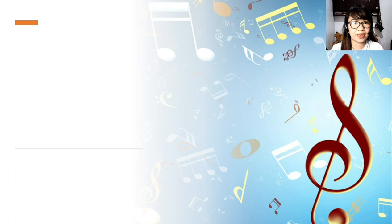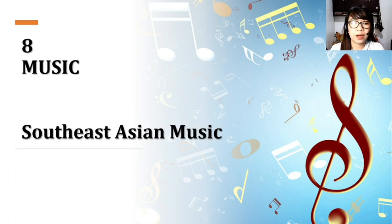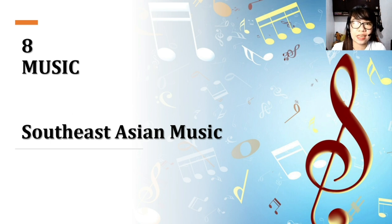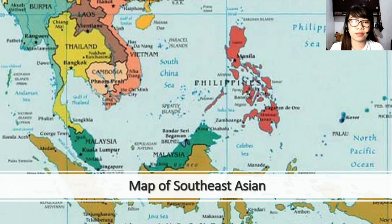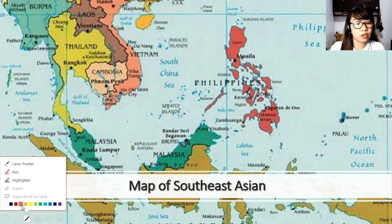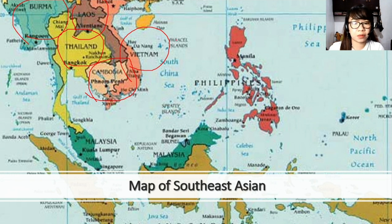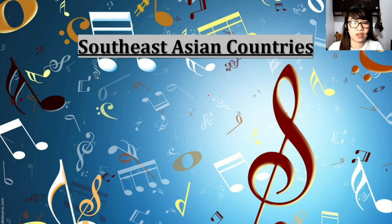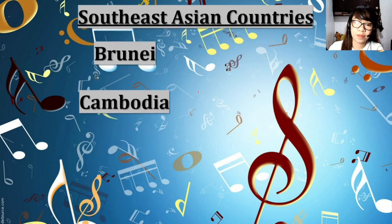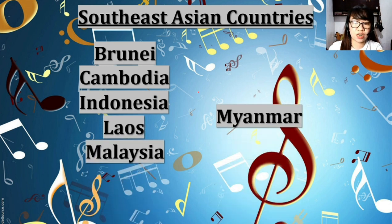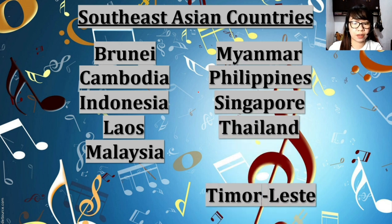Hello again. Today we continue our lesson in Music 8, Southeast Asian Music. Before we move on to Lesson 2, let us have a short review. Last time we already looked at the map of Southeast Asia and encircled the different countries there: Laos, Burma, Thailand, Cambodia, Vietnam, Malaysia, Philippines, and so on.